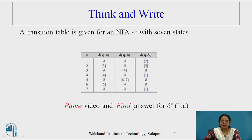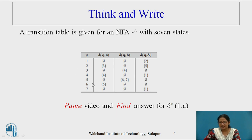All students, please pause the video and try to find out the answer for delta star(1, A). A transition table for an NFA with null transition is given. The machine has 7 states, with A, B, and the null symbol processing mentioned in the columns. Try to find out delta star(1, A).